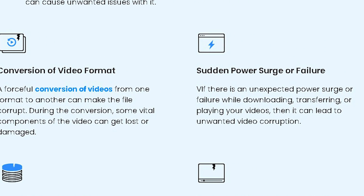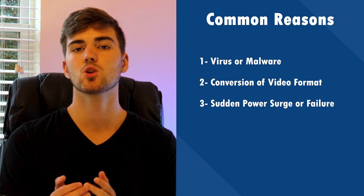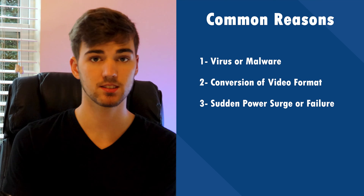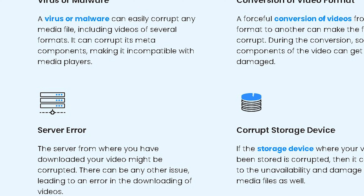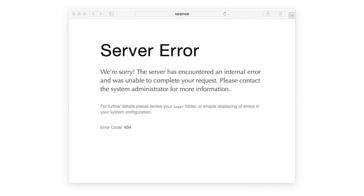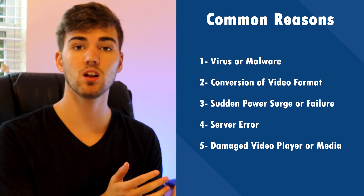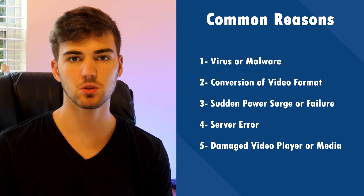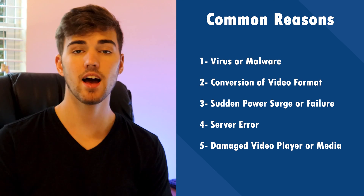Reason three — sudden power surge or failure. In case there's an unexpected power surge or failure while transferring video files from one device to another, your computer may lose some important components and damage the file. Reason four — server error. Sometimes the server you've downloaded the video from might be the reason behind the corruption. If you're connected to an unstable internet connection, it might also corrupt files by downloading them partially. Reason five — damaged video player or media. The media player you're using to play the file can also damage the video, generally when you try to open an incompatible file, which ends up damaging the codec settings and corrupting the file.